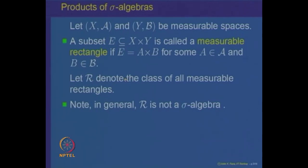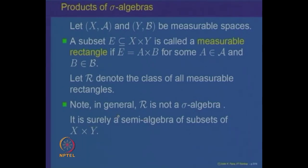We had already observed while discussing semi-algebras, algebras, and sigma algebras, that sets of the type A×B, where A comes from one sigma algebra and B from another, need not form a sigma algebra. In fact, they need not even form an algebra. Since A and B are sigma algebras they are also semi-algebras, and we have shown that rectangles of the type A×B form a semi-algebra. So the set of all measurable rectangles forms a semi-algebra of subsets of X×Y.